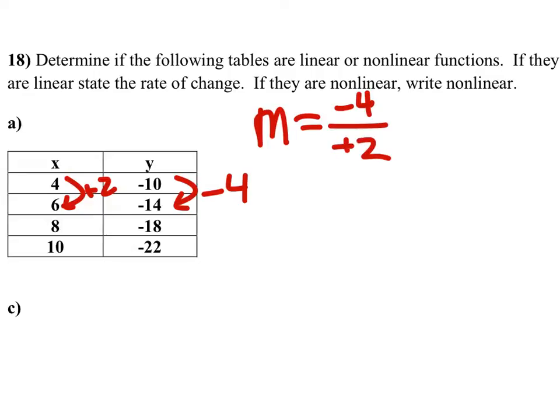So we need all of these to be equal. From negative 14 to negative 18 is down 4, and then from 6 to 8 is added 2. So these are all equivalent. Now if they're simplified or even scaled up, it wouldn't matter as long as they are equivalent.